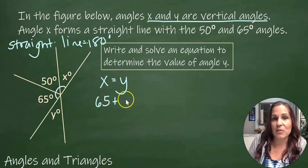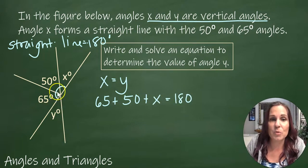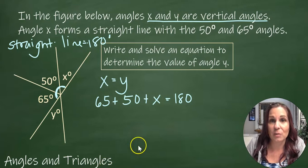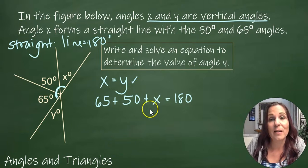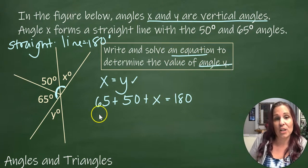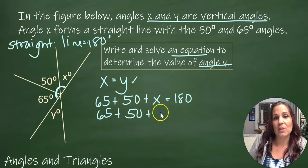So I can write an equation: 65 plus 50 plus X must equal 180, because those three angles we were told form a straight line, which means they add up to 180. Now we also know that X is equal to Y, so if I need an equation to find the value of Y, I could change this to 65 plus 50 plus Y equals 180.